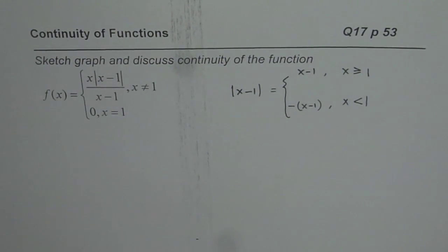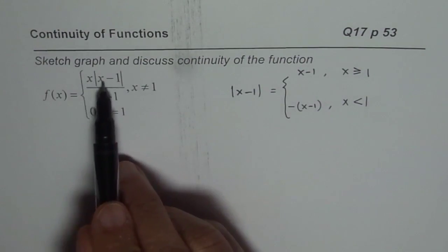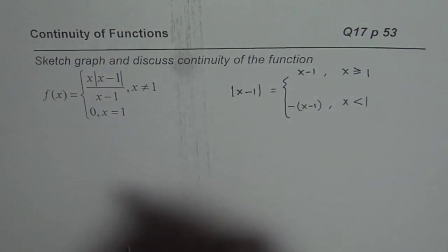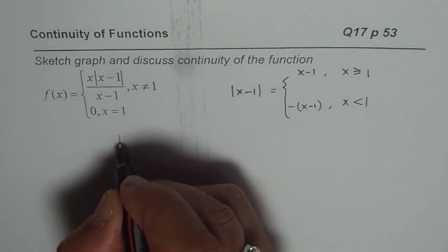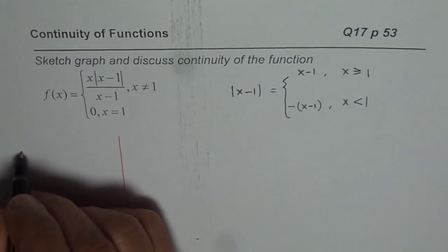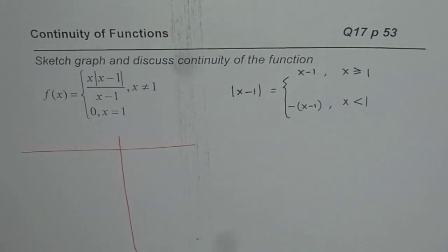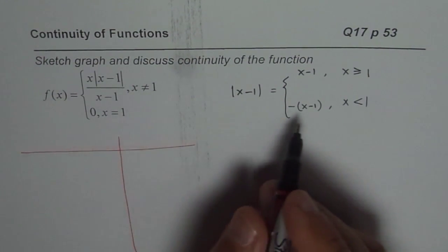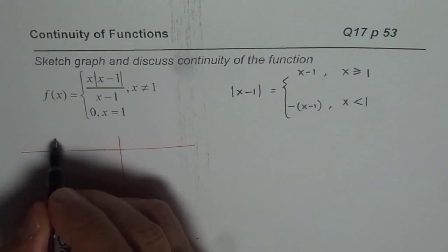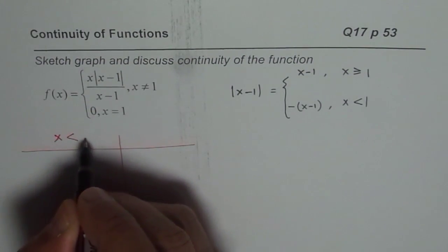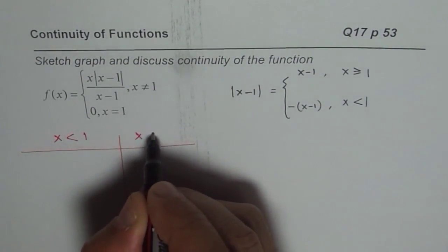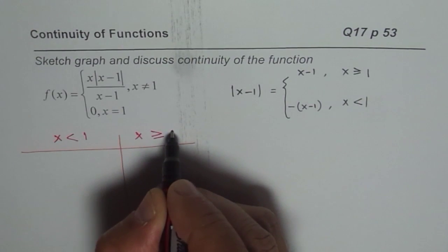Whenever you have a function involving absolute function, you have to always see it in two parts. So let me divide it in two parts first. We'll graph here on this side. So let us first begin by writing the function. We will think about the domain split into two halves: one x less than 1, the other one where it is greater than or equal to 1.